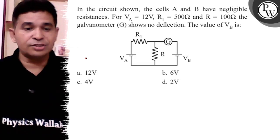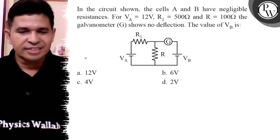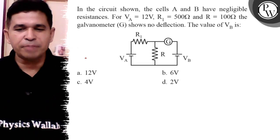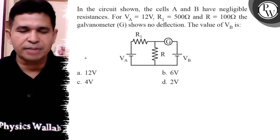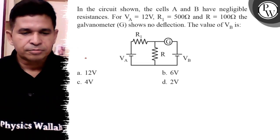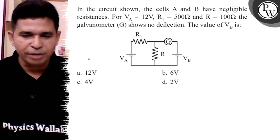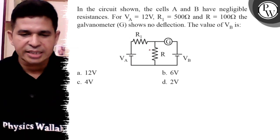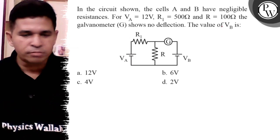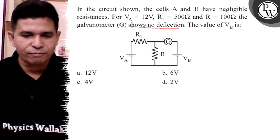Hello, let us see this question. In the circuit, cells A and B have negligible resistance. VA is 12 volt, R1 is 500 ohm, R is 100 ohm, and the galvanometer shows no deflection.